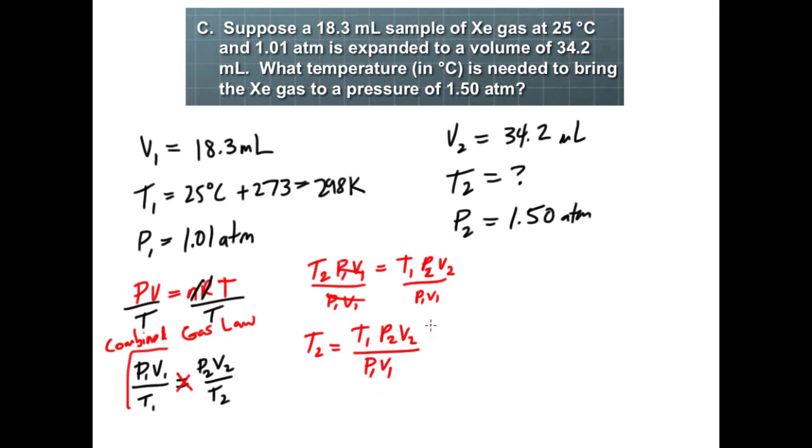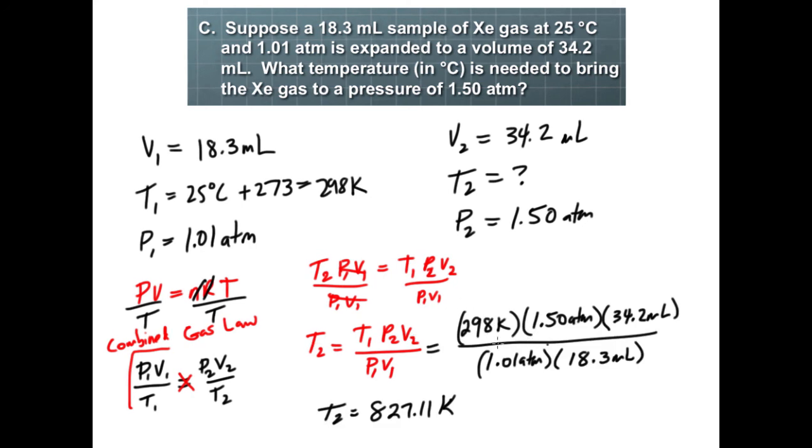Now I'm going to plug into the equation. Notice that your atmospheres cancel, milliliters cancel. I have a unit of Kelvin, which is important because in the problem they want it in Celsius. When you do the multiplication and division, you get 827 Kelvin. We've got to drop it down by subtracting out 273, and I end up with 554 degrees Celsius.